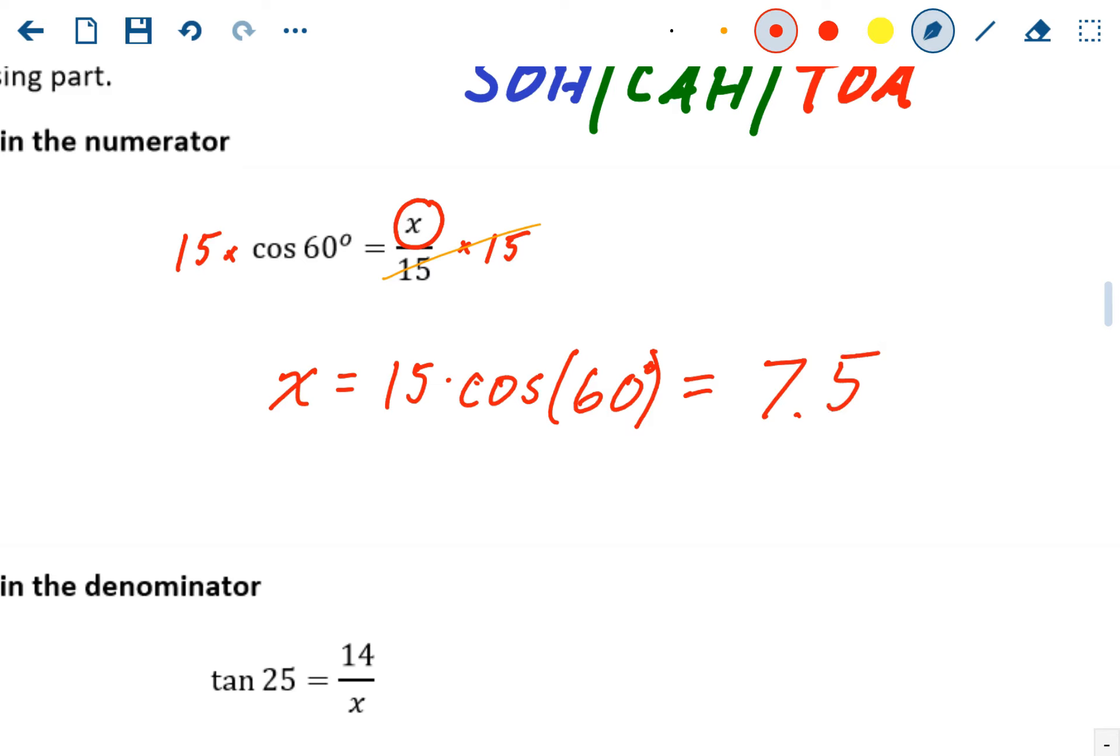So that's going to be the missing side length of the triangle. So that's scenario one. If your variable is on top, just multiply both sides by the denominator, you'll be done.